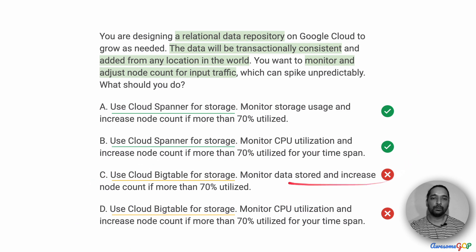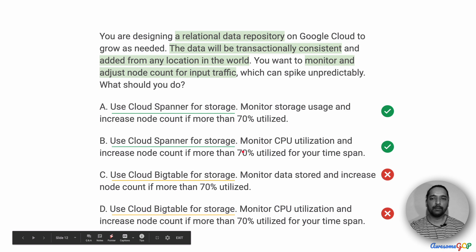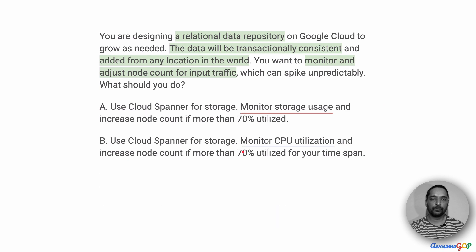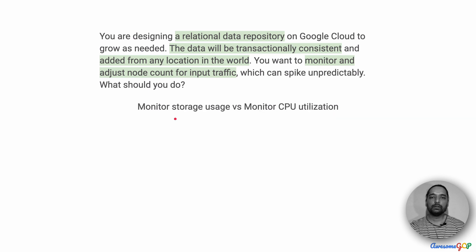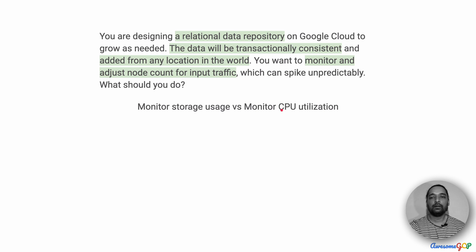With that, we can eliminate options C and D and retain only options A and B. The next part is to choose between monitoring the storage that is used and increasing node count based on that, or monitoring the CPU utilization and increasing node count based on it. To decide, we need to understand a little more about how a Cloud Spanner instance or cluster is created and which of these would be the better option.